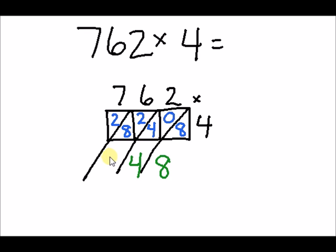In this column, we have 2 plus 8, which is 10. So, we put the 0, and we carry the 1 over to the other column. 1 plus 2, 3. So, the result is 3048.